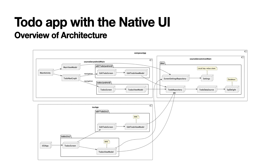The components follow the configuration created by the Kotlin Multiplatform Wizard. This Toto app consists of two components: Compose app and iOS app.